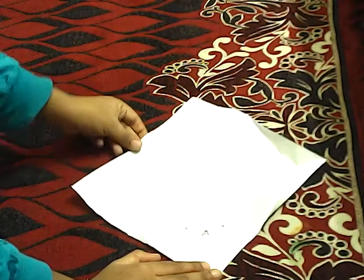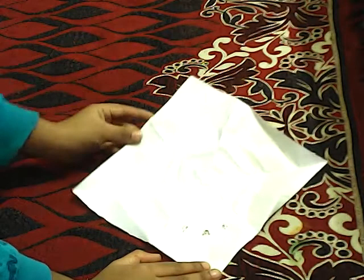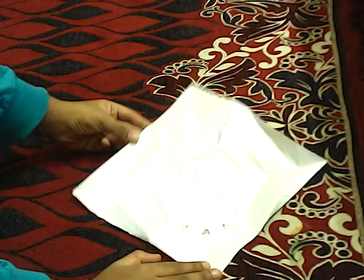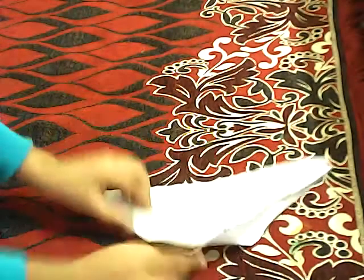Now, we should take a square paper like this one and put it in a diamond shape. Now, we should attach this point to this point.